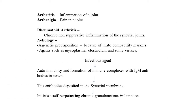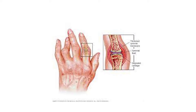Arthritis means inflammation of the joints; arthralgia means pain in the joints. Rheumatoid arthritis is a chronic non-suppurative inflammation of synovial joints. Etiology includes genetic predisposition via histocompatibility markers, infectious agents such as mycoplasma, clostridium, or viruses, and autoimmunity. IgM antibodies form immune complexes in the serum, are deposited in the synovial membrane, and initiate a self-perpetuating chronic granulomatous inflammation.